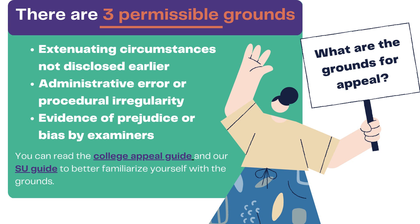Procedural irregularities may relate to irregularity in the ways an assessment was set up or in the marking process — for example, whether a piece of work was marked following the college marking procedure and feedback policy. The final ground is evidence of prejudice or bias by examiners. Bias can be personal dislike or prejudice against a protected characteristic. To appeal under this ground, you need evidence to show that an examiner's marking has been affected by prejudice or bias.